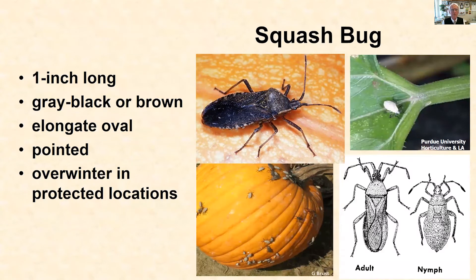The adult is up to an inch long. Some people call this a stink bug, though technically it's not. It can be gray to black to brown in color and they're fairly elongate — not shield shaped like true stink bugs, more elongate. They tend to be pointed at both ends and you can see the wings overlap on the back. The adults spend the winter outside waiting for the plants to come up the following year, so they are ready to go when the pumpkins appear in the field.